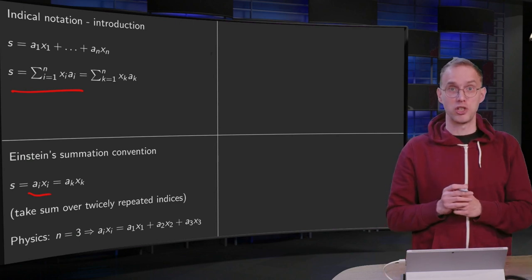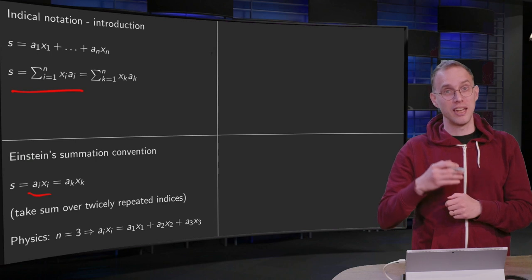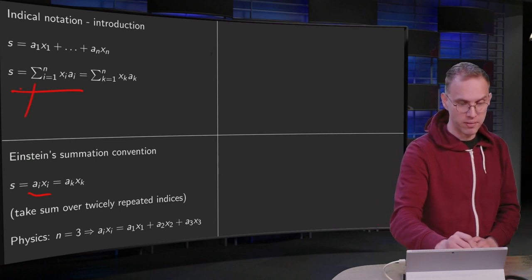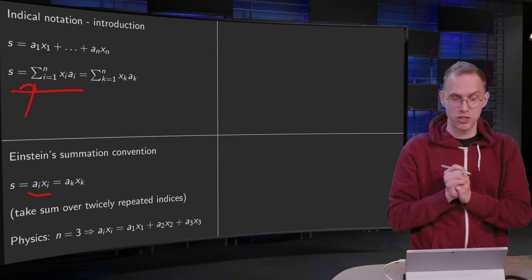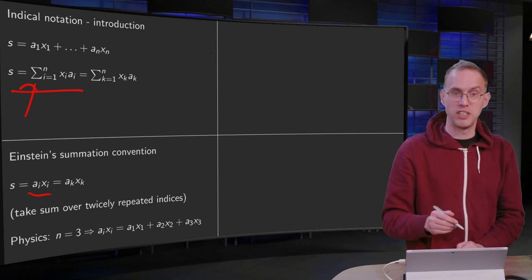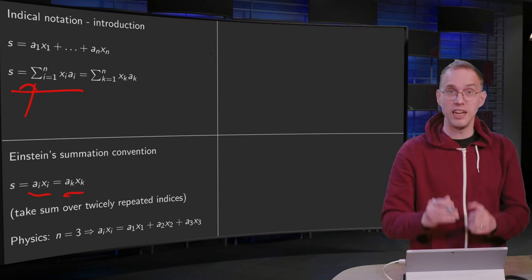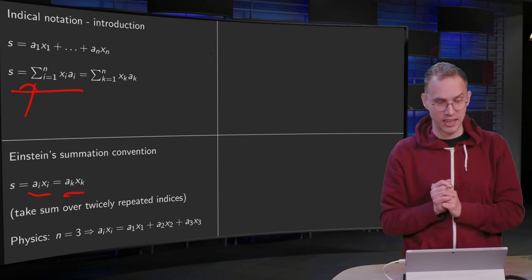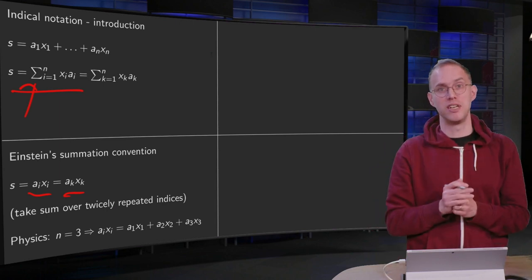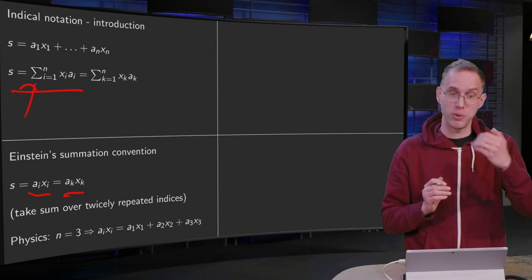So we can write this as sum i equals 1 to n, xᵢaᵢ, just as aᵢxᵢ. There you have an index that occurs twice, the i, so that implicitly means that we have to sum over it from 1 to n. So we kick out this summation symbol. And of course you can give this summation index another name, so that is equal therefore to aₖxₖ. So index occurring twice implicitly means we have to sum over it from 1 to n.